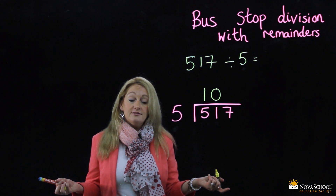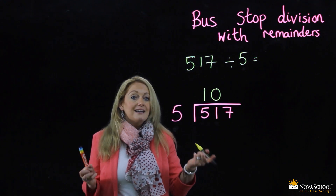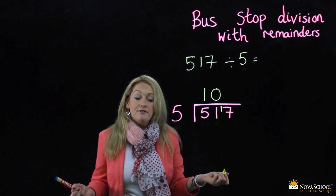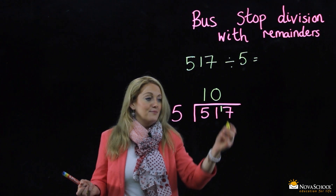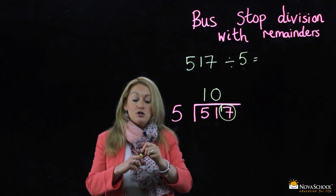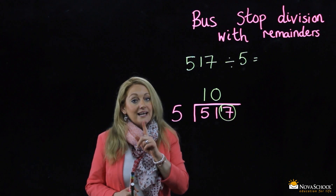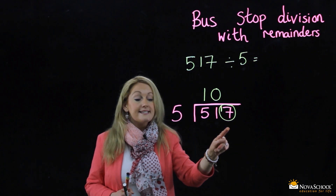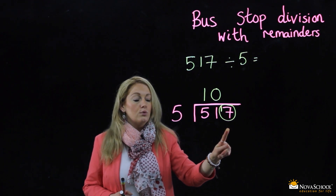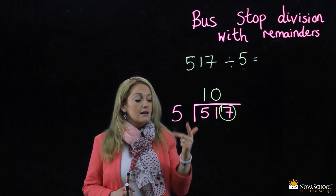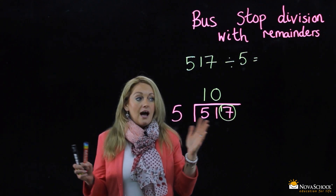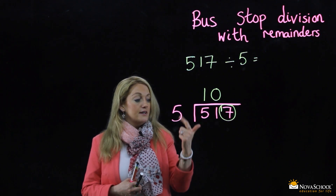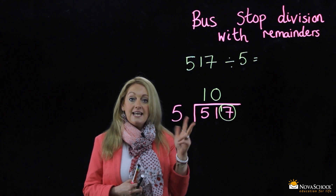What do I do with my one then? My one gets added to the seven, like this. And then what do I have? A new number — let's make a circle and look at the number. Now, here's where your times tables come in. How many times can I put five into seventeen? Five, ten, fifteen — I can't go any further. So how many times was that? Five, ten, fifteen — three times.